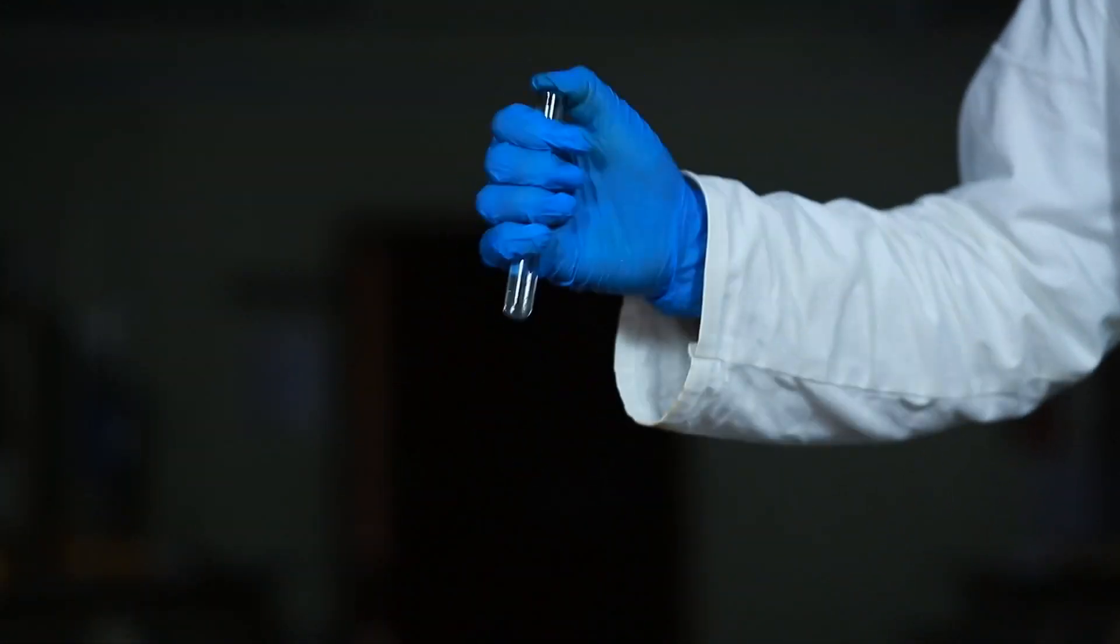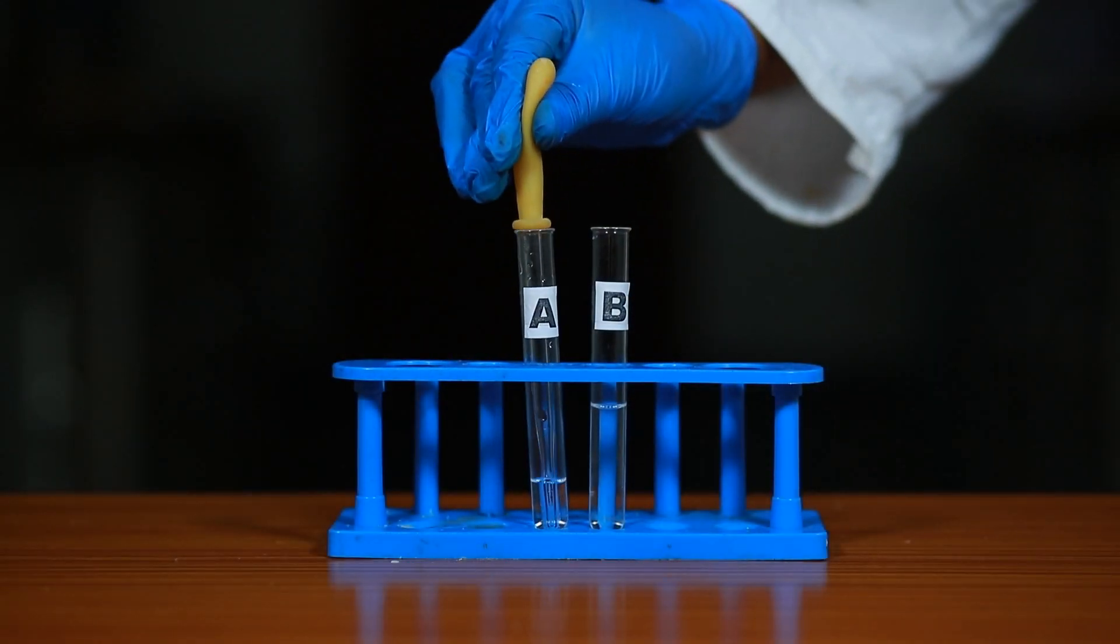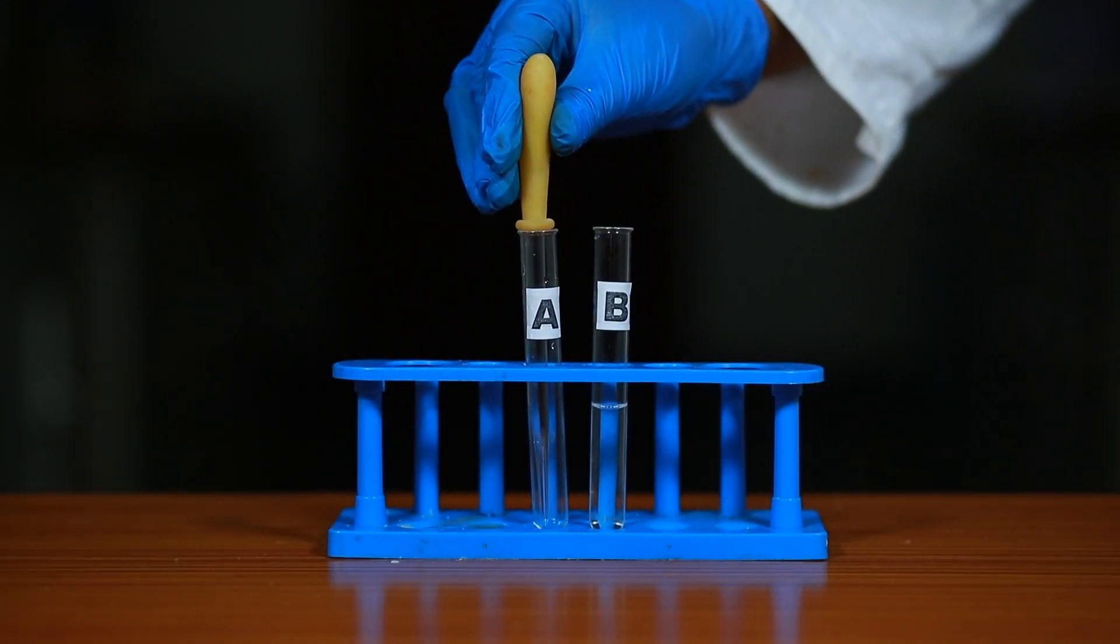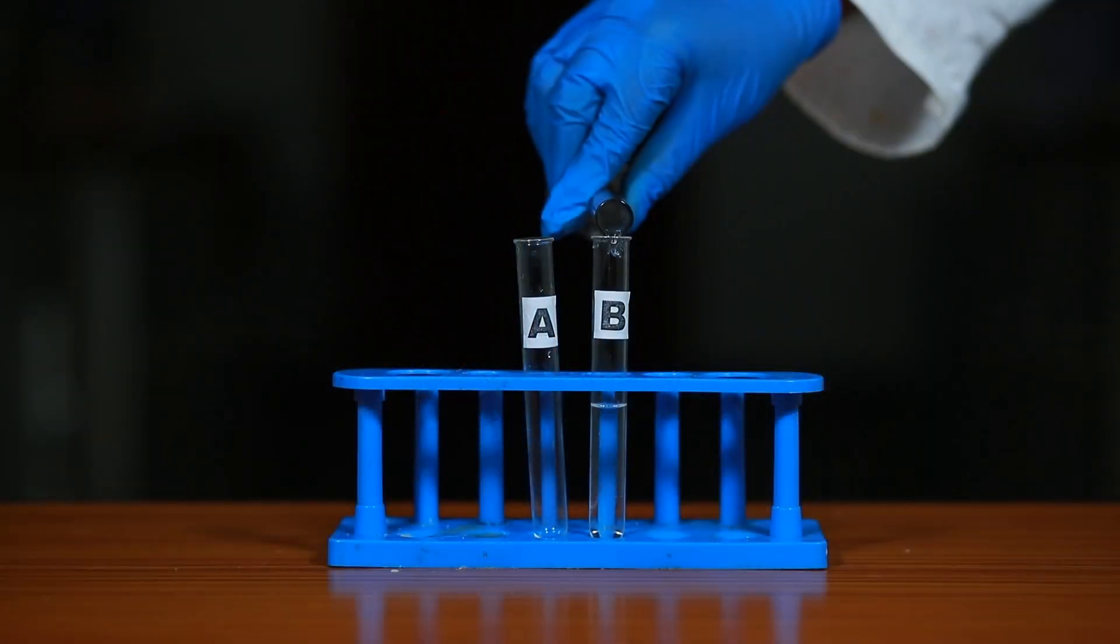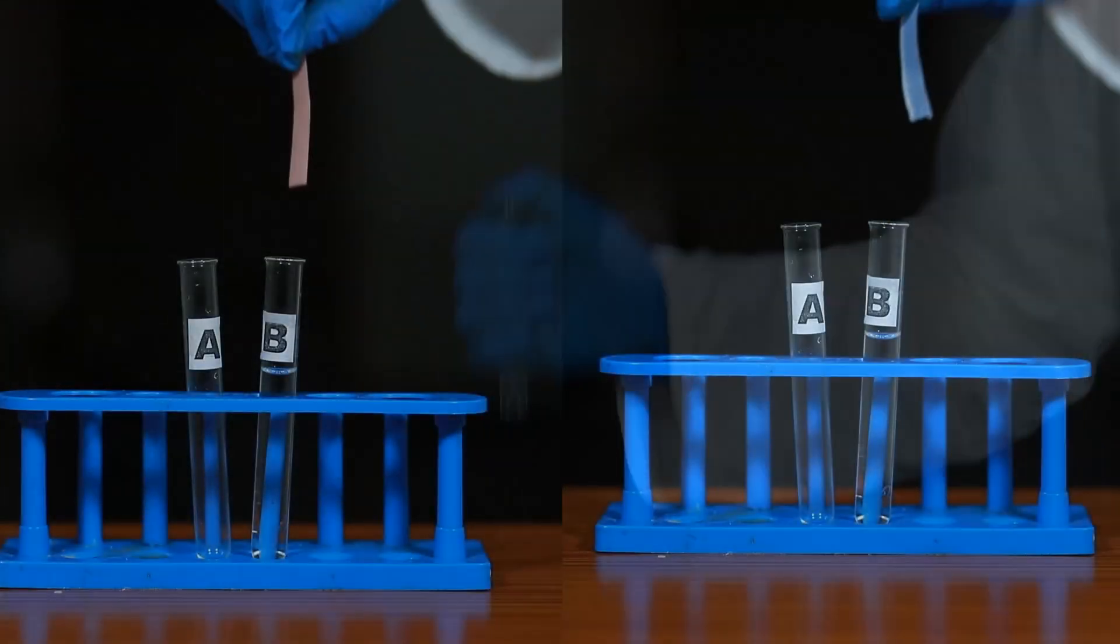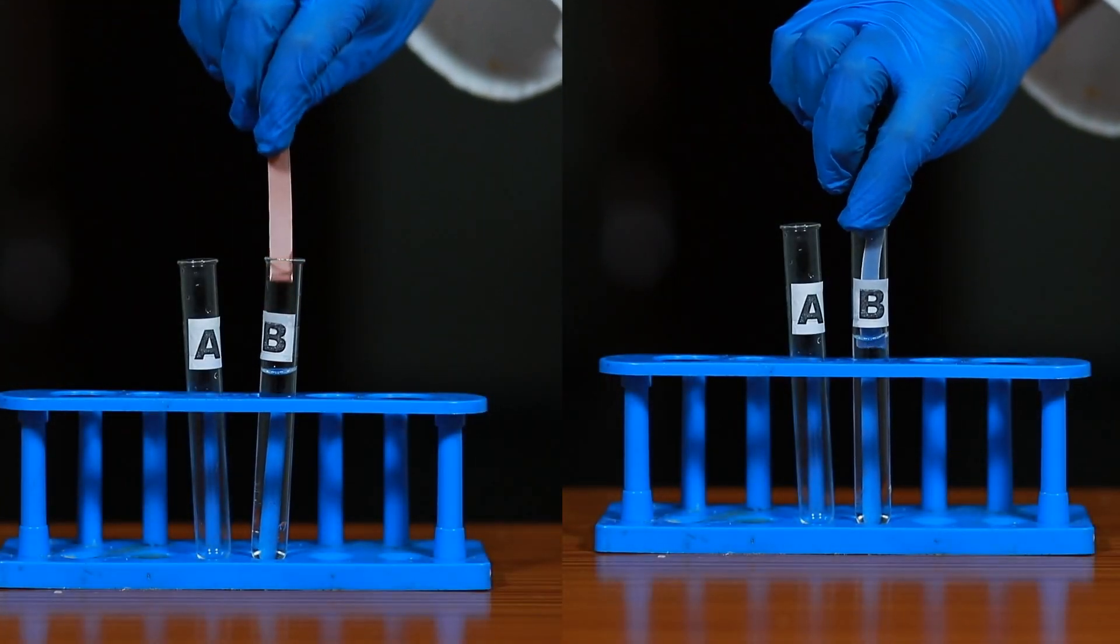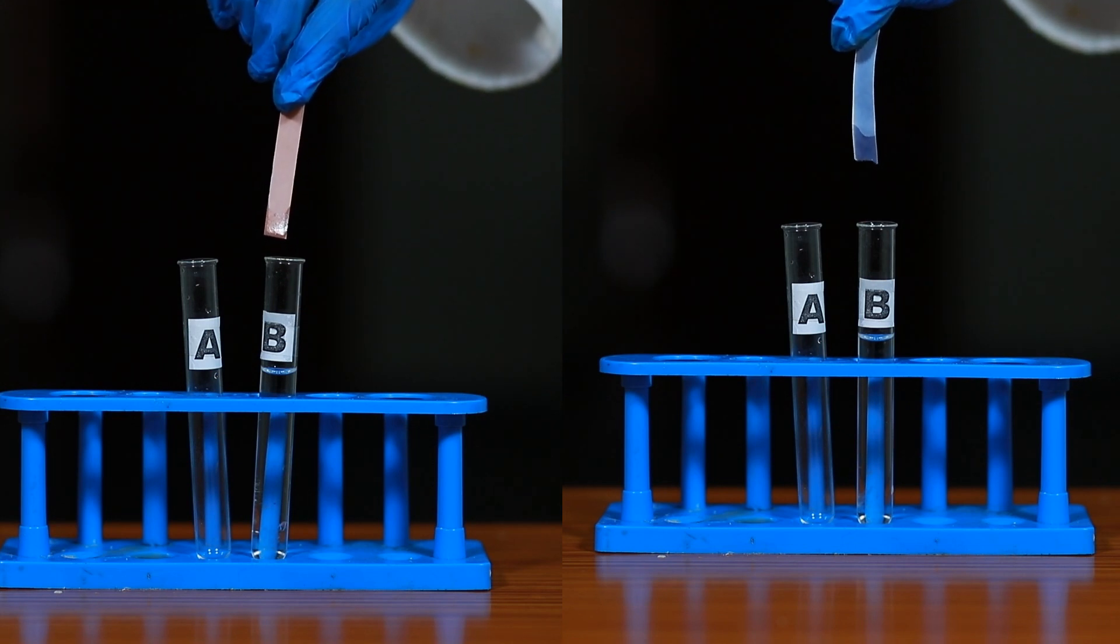Mix the solution slowly. Keep on adding the dilute HCl, 3 ml from test tube A to dilute NaOH in test tube B dropwise, until the reaction mixture in test tube B becomes neutral to litmus paper. No color change of blue and red litmus when pH of the solution is 7.